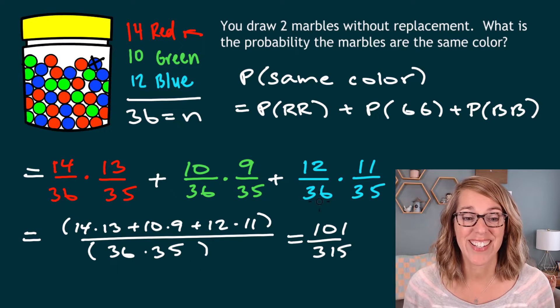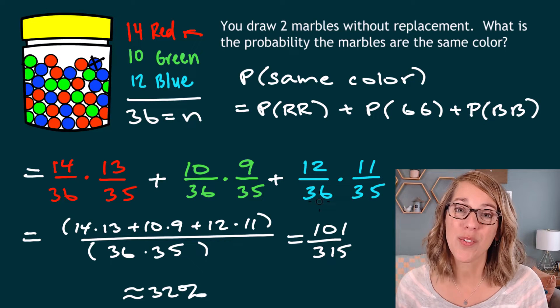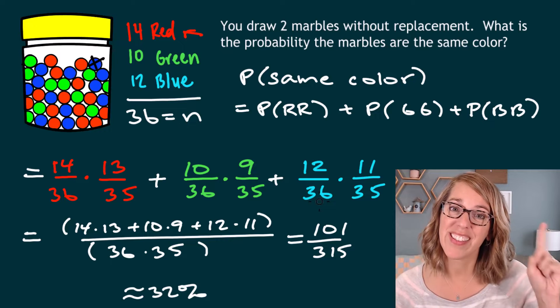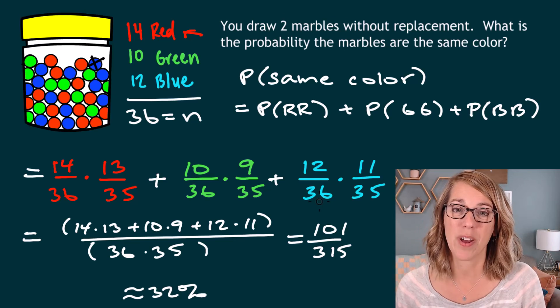As a percentage, it's about 32%. You guys are doing so great with these probabilities. Do take a look at this video right here. It's going to take you through probabilities with cards. Thanks for watching.